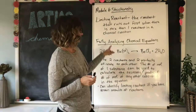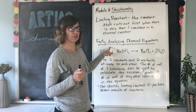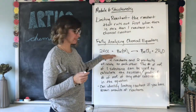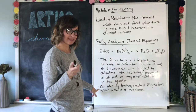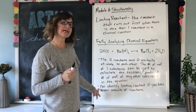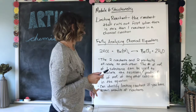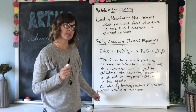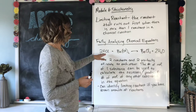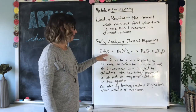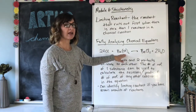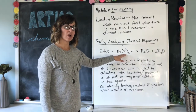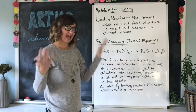Additionally, when fully analyzing chemical equations, when you have a balanced chemical equation like this one, you can identify the limiting reactant if you have the known amounts of reactants. If you know how much HCl you have and you know how much barium hydroxide you have, you can figure out which one is the limiting reactant.